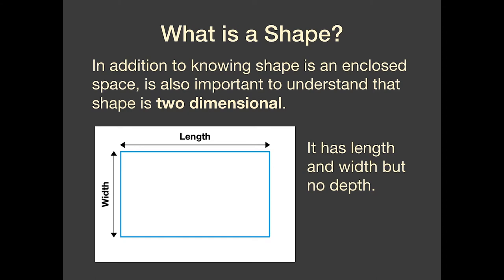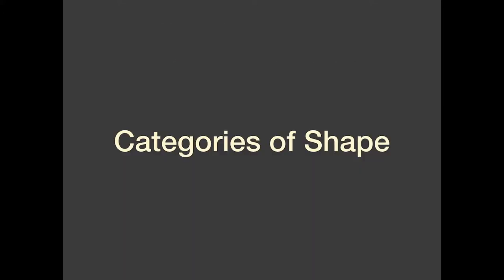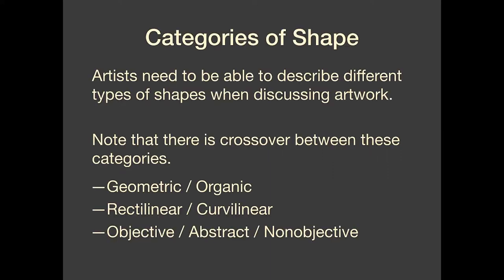It's important to know that in addition to shape being an enclosed space, it's also crucial that shape is two-dimensional. You may remember when we talked about line with project one that we talked about line being one-dimensional — it's mostly about length. Now we're adding that second dimension: shape is about length times width. It does not, however, have any depth. It's just length times width, which means it's flat. We sometimes say that shape is planar because it is part of a 2D surface or a plane. As artists, it's important to know a little bit about some different categories of shape so we can intelligently talk about how shape is used both in artwork we're looking at and artwork we're making.